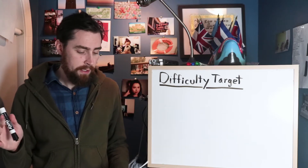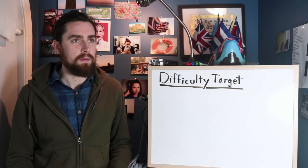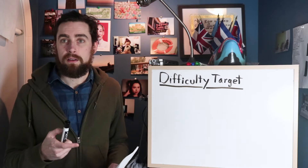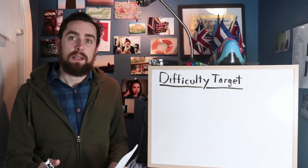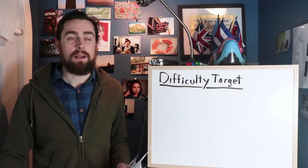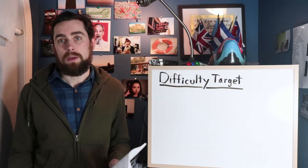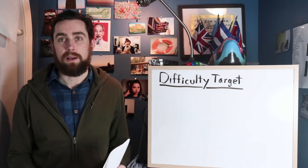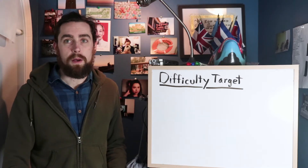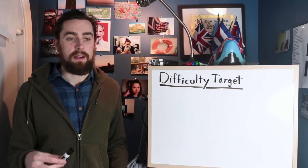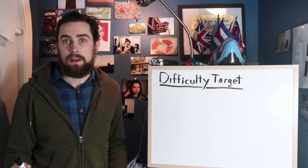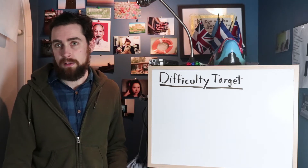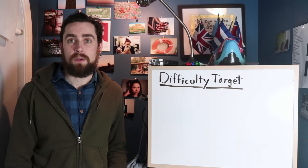Hello again everybody and welcome to another episode. In this video I'm going to be talking about difficulty target, difficulty retargeting, and how that's calculated in Bitcoin. This concept can also be applied to pretty much any cryptocurrency that uses proof of work as its consensus algorithm. I always wondered what exactly that meant — I knew it had something to do with mining, so I decided to do a bit of research and make this video.